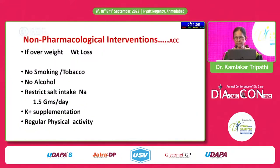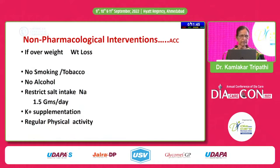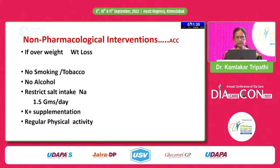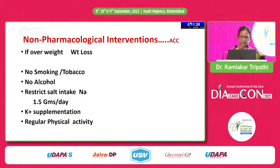Non-pharmacological interventions, as given by the American Cardiological Association: if overweight, weight loss — that is the main point. No smoking or tobacco in any form. No alcohol. Restrict salt intake to 1.5 grams of sodium per day. If necessary, give potassium supplementation and regular physical activity, which is a must. This applies to both diabetes and hypertension, and in pre-hypertension you can start this intervention immediately.